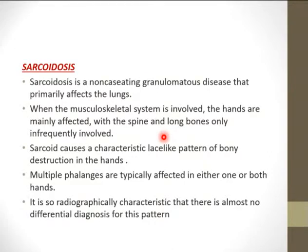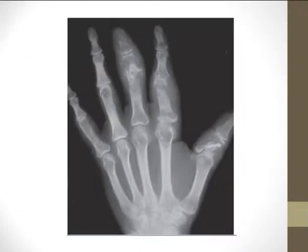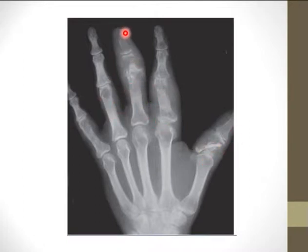Sarcoidosis is a non-caseating granulomatous disease primarily affecting the lungs. When the musculoskeletal system is involved, the hands are mainly affected; the spine and long bones are infrequently involved. It causes a characteristic lace-like pattern of bony destruction in the hands with multiple phalanges affected in one or both hands. There is also sausaging of the fingers with swollen soft tissues. This appearance is so characteristic that no other differential diagnosis is needed — no further tests required.